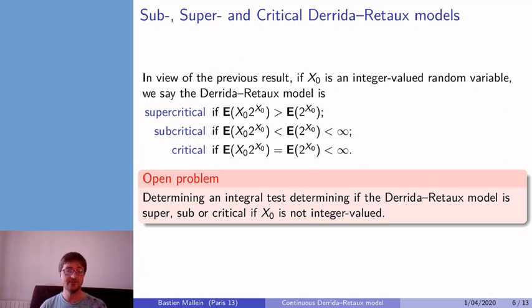Even in simple cases, for example, if X₀ is half-integer valued, which would correspond to the parking process, where at each internal node, instead of one parking spot, you get two parking spots.